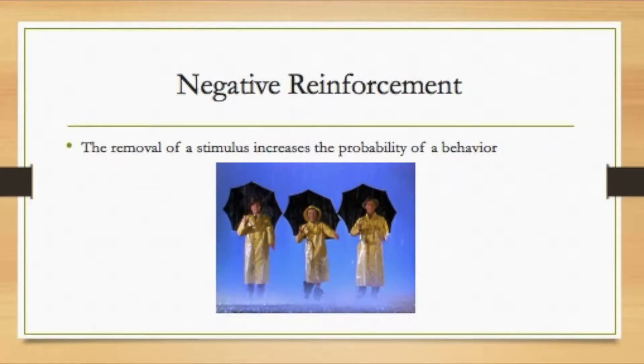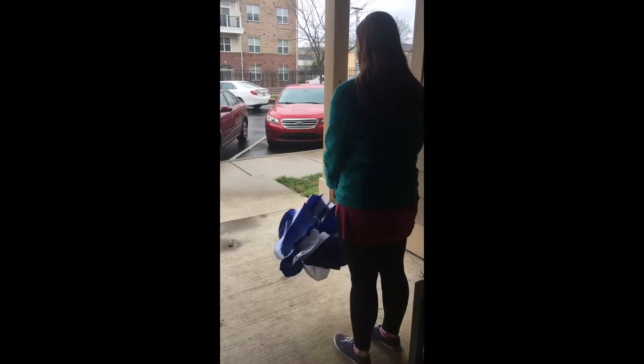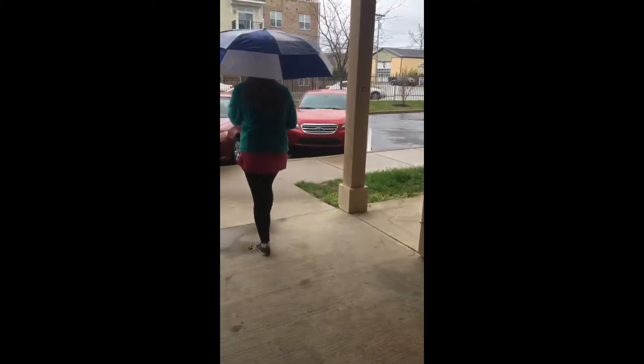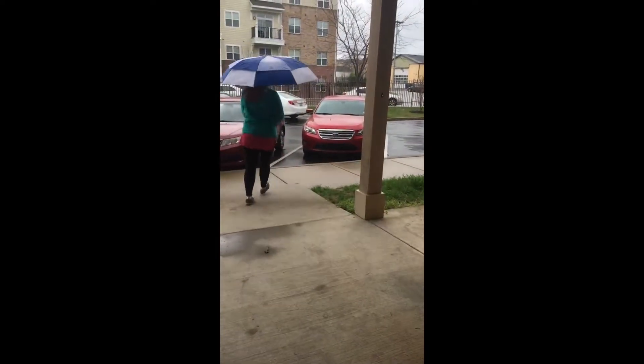Another type is negative reinforcement, where the removal of a stimulus increases the probability of a behavior. An example of this would be opening an umbrella to stay dry.